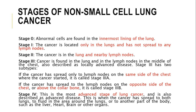Stage 3 is subdivided into 3A and 3B. In 3A, the cancer has spread locally to the lung and lymph nodes, but remains on the same side of the chest. In stage 3B, the cancer has spread to the opposite side of the chest or above the collarbone; both lungs are now affected, which is a very grave situation.